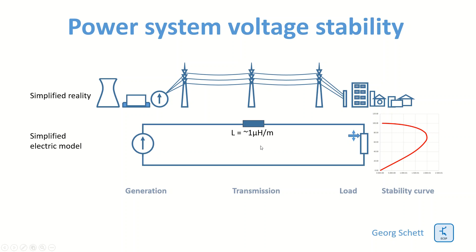For the power line we normally have an inductance of around about 1 µH per meter — it's a little bit less, but we will use that for our model. The voltage stability in a power system is strongly related to the reactive power required to build up the oscillating magnetic fields of the power lines from the generation point to the loads. These lines require reactive power, and this reactive power is the issue we get with load stability at the load.